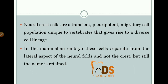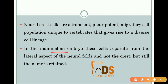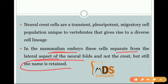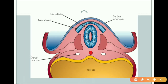Neural crest cells are pluripotent cells and they are unique to vertebrates. In mammalians and avians, in the mammalian embryo these cells separate from the lateral aspect of the neural folds. Even though they are named neural crest cells, you have to remember they are transient pluripotent cells.